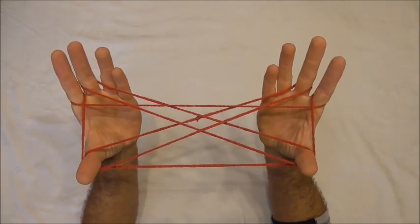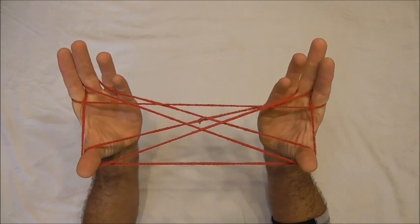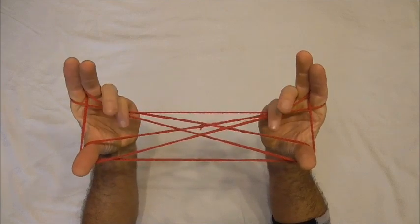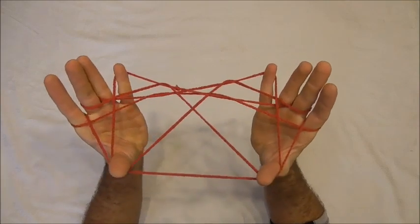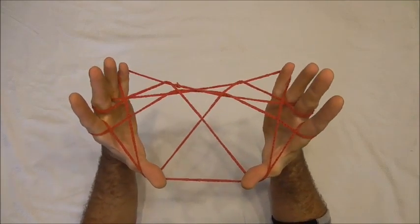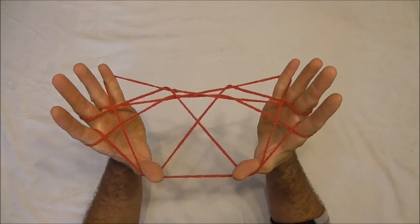Then with my little fingers I want to go over all the strings into the thumb loops from below and collect the far thumb string. And then drop the thumbs.